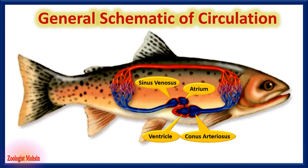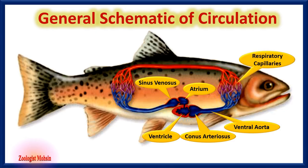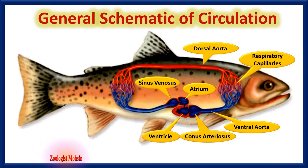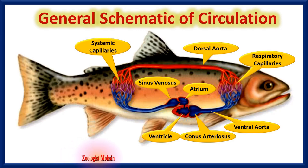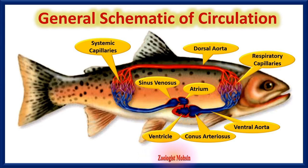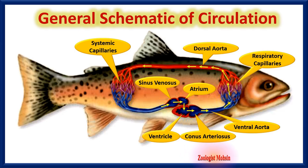These four chambers are the main structures in fish circulatory system. Next to the conus is the ventral aorta, which supplies blood to respiratory capillaries for oxygenation in gills. After oxygenation, the blood is directly sent to the dorsal aorta for distribution to body parts. Exchange of materials occurs in systemic capillaries. When blood becomes deoxygenated, it is collected by veins from the whole body and sent again to the sinus venosus.